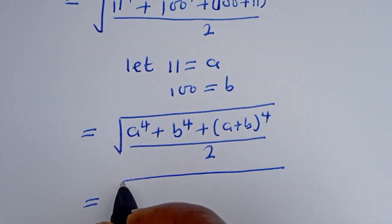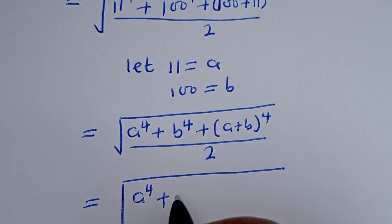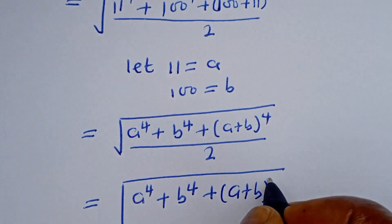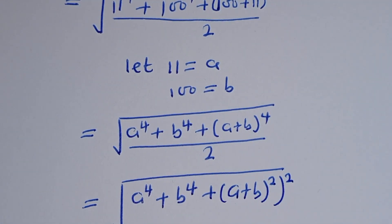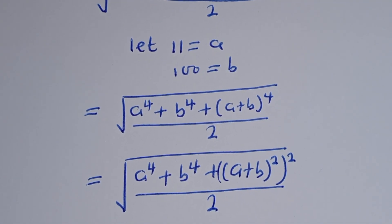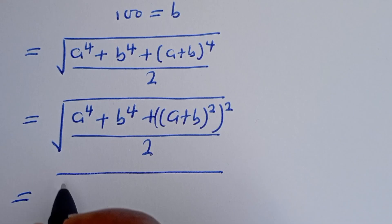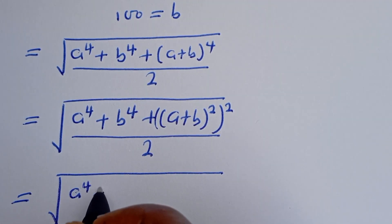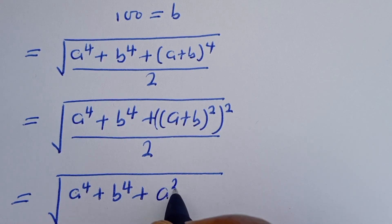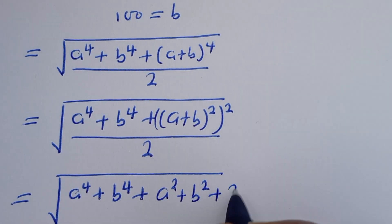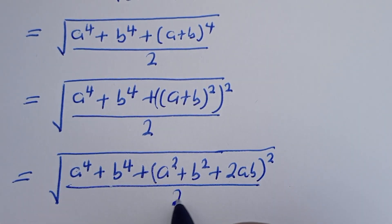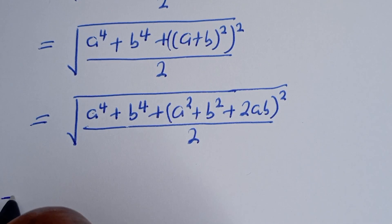This equals the square root of a⁴ plus b⁴, plus (a + b)⁴. Now (a + b)⁴ can be written as [(a + b)²]², and expanding (a + b)² gives a² + b² + 2ab. So we have the square root of a⁴ plus b⁴, plus (a² + b² + 2ab)², all divided by 2.